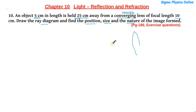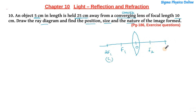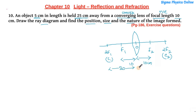Here we have a convex lens with the optical center marked. Here is the first focal point f1, and double of that is 2f1, also called c1. On the right side we have f2 and 2f2, that is c2. A convex lens has a positive focal length. The focal length is 10 centimeter on both sides, so 2f1 equals 20 and 2f2 equals 20. The object is held at 25 centimeter away from the optical center.